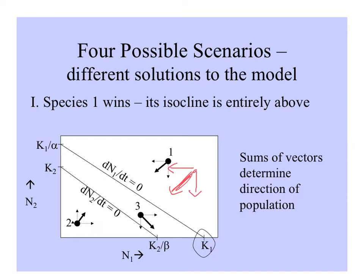If it's below — looking at point 2, below both isoclines — species 1 increases in the x direction, species 2 in the y direction, and their sum takes them until the combination of N1 and N2 is between the two lines. This is beneath the isocline of species 1, so it will increase in the x direction. However, it's above the isocline of species 2, so it will decrease in the y direction, and its sum will take it in that direction until the final solution is that species 1 reaches its carrying capacity and species 2 is 0. Species 1 wins in this competitive interaction.